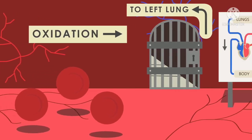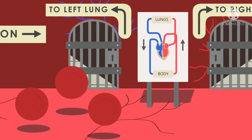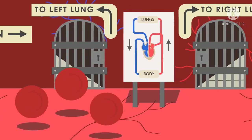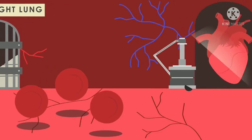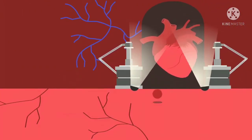This deoxygenated blood doesn't travel straight to the lungs to become oxygenated. It must first travel to the heart so it can be pumped into the lungs, ready for another round.